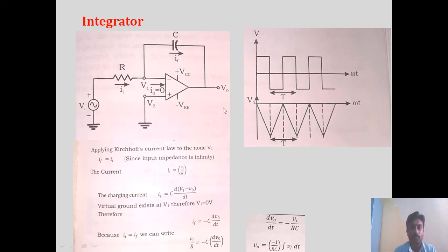To get the expression for V0, similarly as we did in inverting amplifier and non-inverting amplifier, we need to consider these two currents and get the expression for V0. First, applying Kirchhoff's law to node V1.